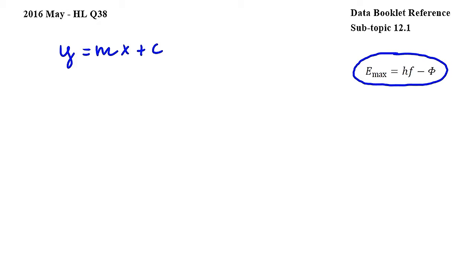However, the important thing here is that m, or the letter in front of x, represents the gradient or slope, and c represents the vertical axis intercept.